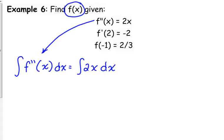We're going to take the anti-derivative. Now, if we take the anti-derivative of the second derivative, what is our result? The derivative, the first derivative. So f prime of x is equal to, what's the anti-derivative of 2x?